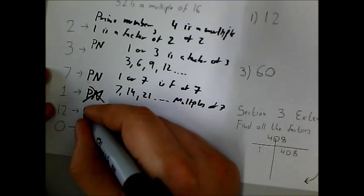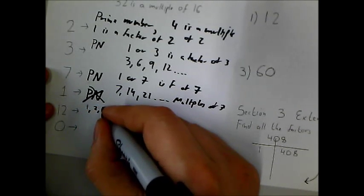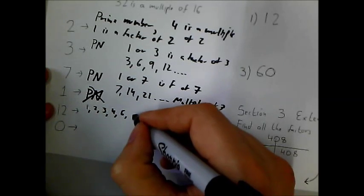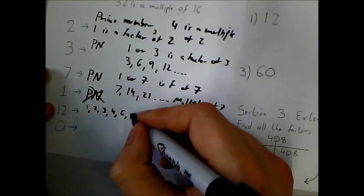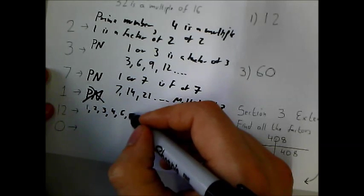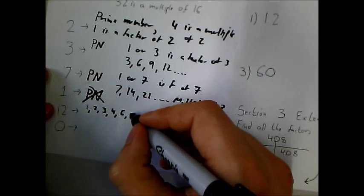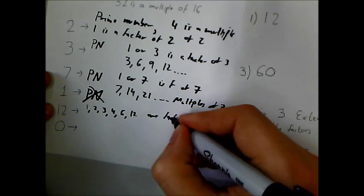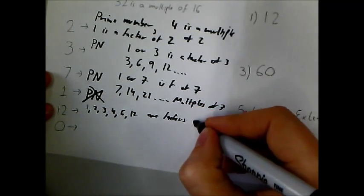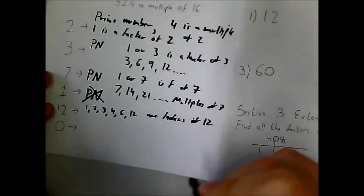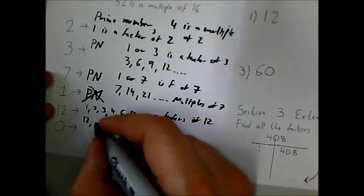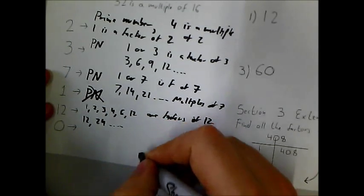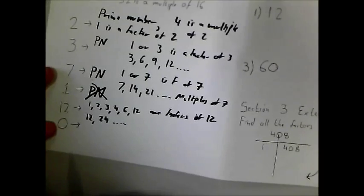For 12, you could have said 1, 2, 3, 4, 6, and 12 are factors. So any of those are factors of 12. And for its multiples, you could have said 12, 24, etc. are multiples.